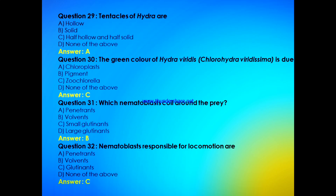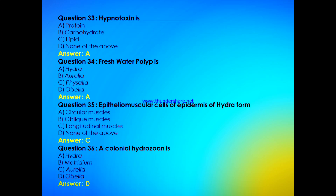The green color of Hydra viridis is due to — chloroplast, pigment, zoochlorella, or none of the above? The answer is C, zoochlorella. Which nematoblast coils around the prey — penetrants, volvents, small glutinants, or large glutinants? The answer is B, volvents. Nematoblasts responsible for locomotion are — penetrants, volvents, glutinants, or none of the above? The answer is C, glutinants.